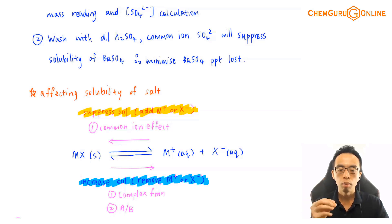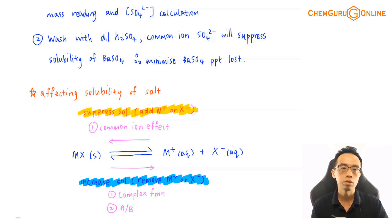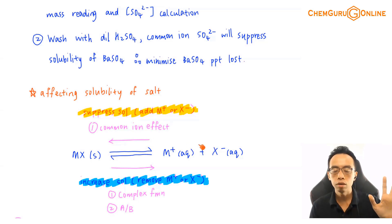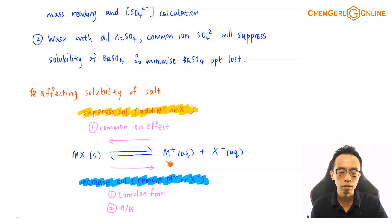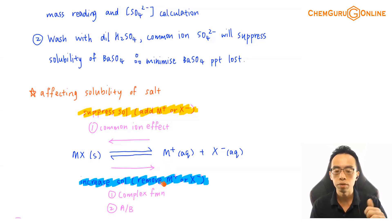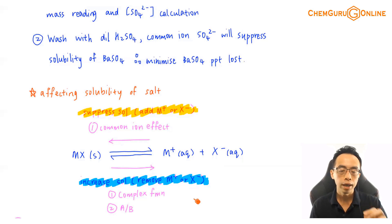The common ion effect is explicitly discussed but focuses on suppression of solubility. What we want to do next is talk about processes to increase solubility. If suppression involves shifting equilibrium towards the left by increasing product concentration, then to increase solubility we simply remove the product — either the cation or the anion — and the position of equilibrium will shift towards the right, dissolving more salt. We will look at two examples: complex ion formation to lower the cation concentration, and acid-base reaction to lower the anion concentration.